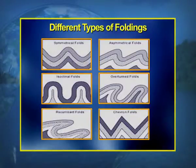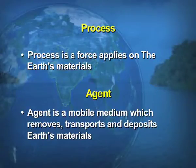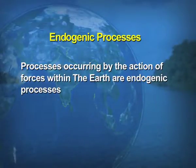The diagrams show various types of folding resulting from compression. Now, on terminology: a process is a force which applies on the Earth's material. An agent — examples being river, wind, and glacier — is a mobile medium which removes, transports, and deposits the Earth's material at some other place. That is the action of agents.